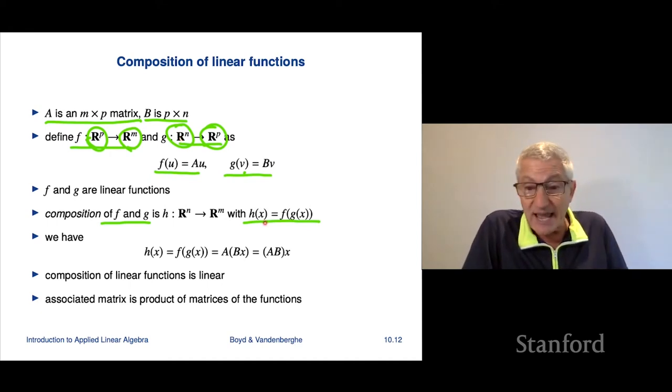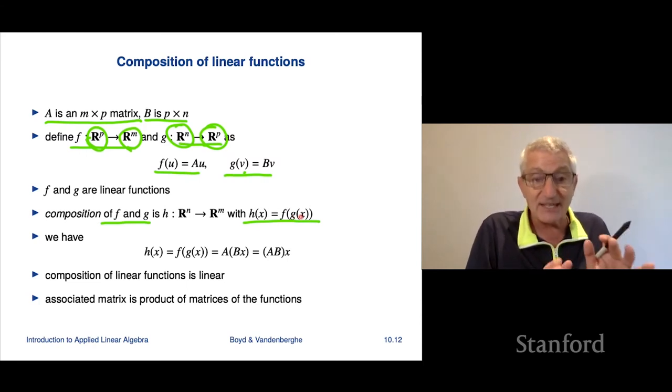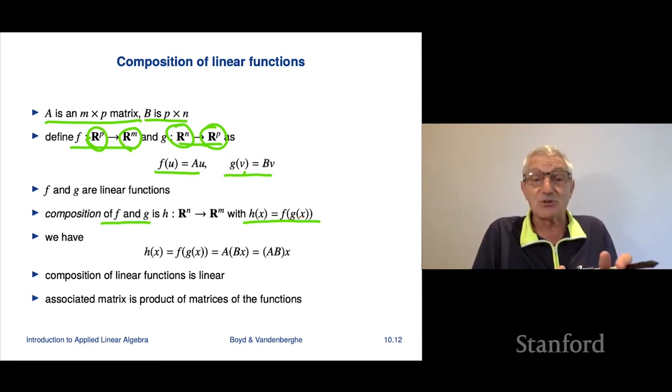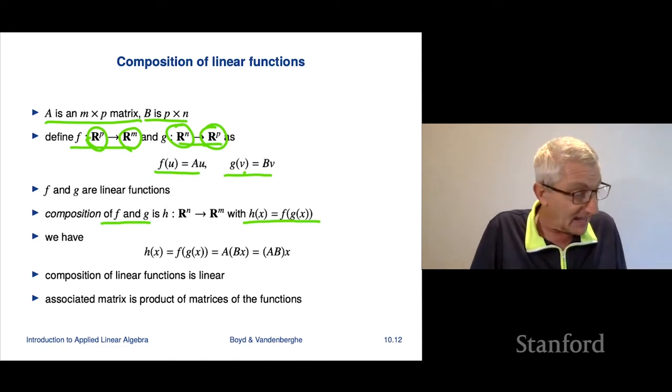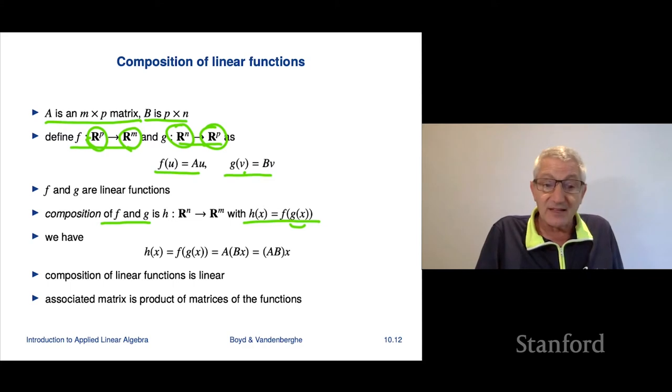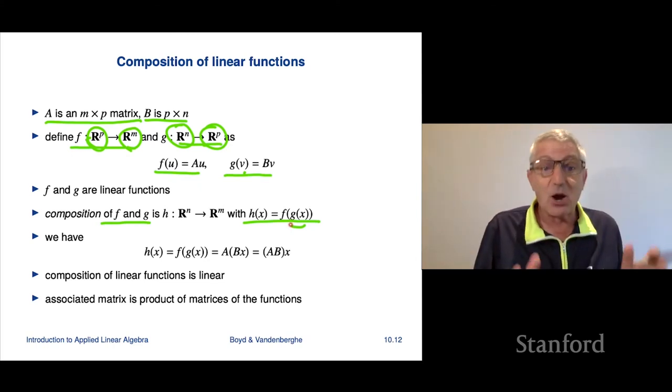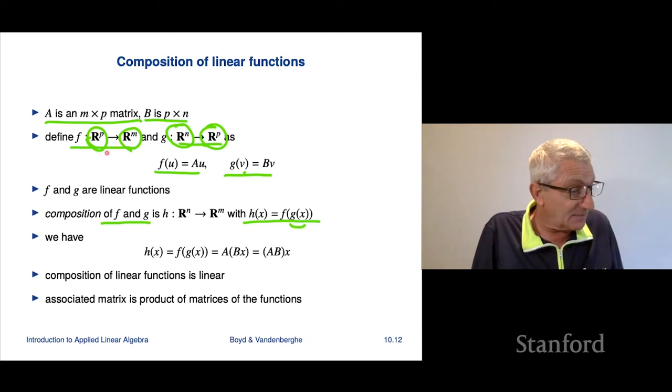And so the way we write that is this: we say h of x, h here is the composition of f and g, and it says h of x is f of g of x. Now, you really have to sit here and parse this very carefully to make certain that the syntax makes sense and everything like that. So here x is an n vector, g of x is a p vector. Then we look at f and in computer science, you'd say we check the signature of f, but this is math, not computer science. So we check what f takes as an input. f takes as an input indeed a p vector. So we're cool. And then f of g of x is indeed an m vector.